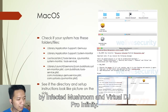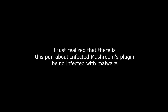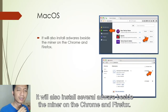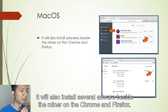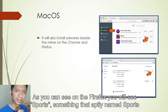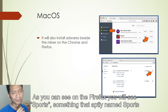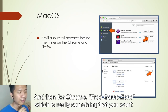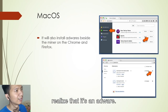Additionally, Polyverse Music Manipulator by Infected Mushroom and Virtual DJ Pro Infinity will also install several adwares alongside the miner — on Chrome and Firefox. On Firefox, you'll see a suspicious extension aptly named 'Sports,' and on Chrome, 'Free Game Zone' — things you might not immediately recognize as adware.